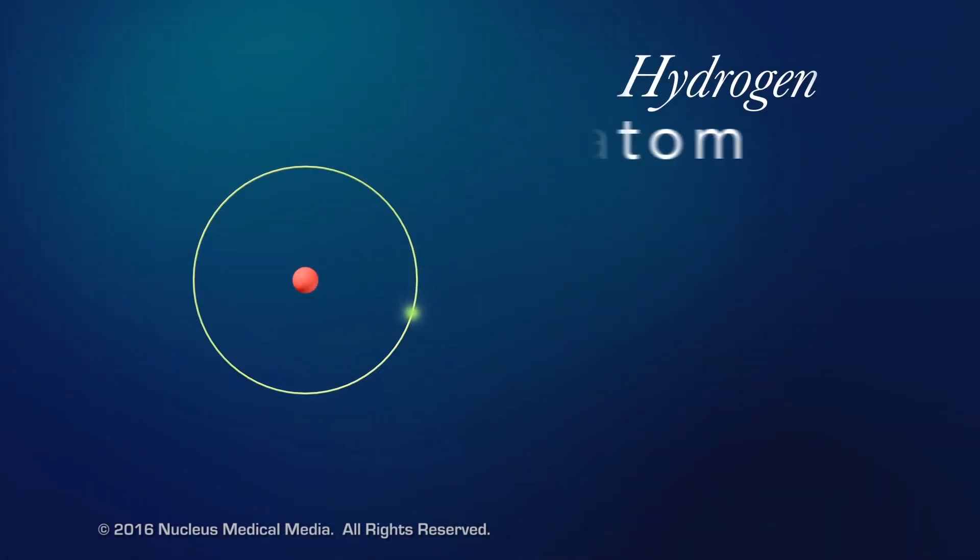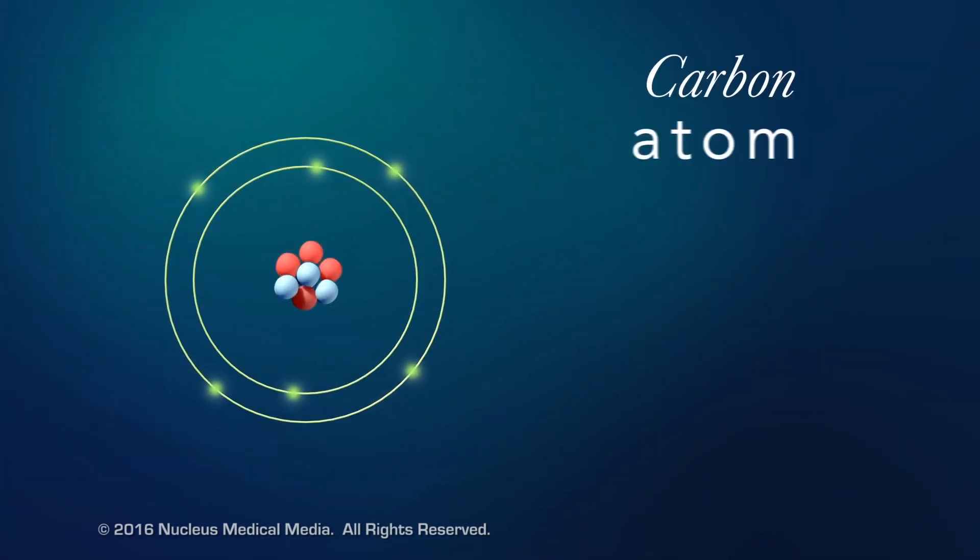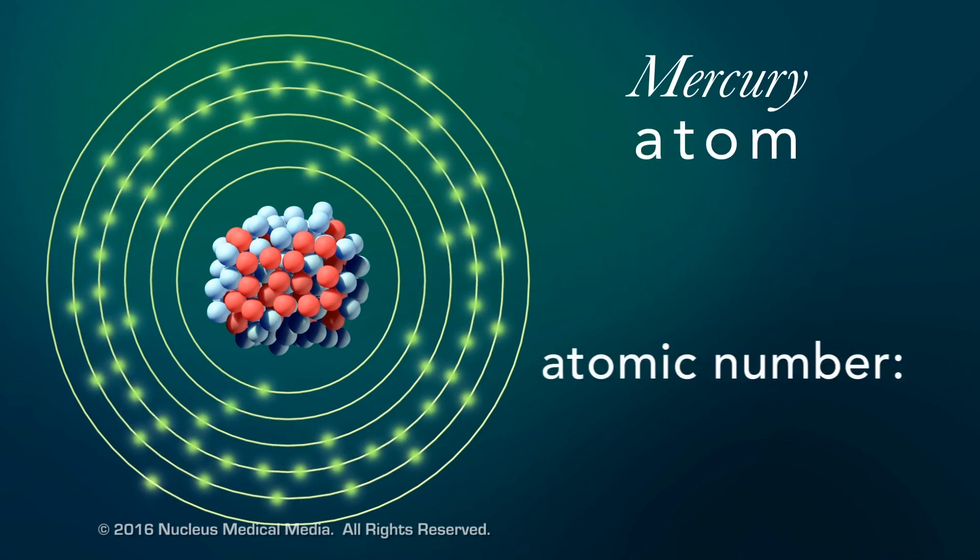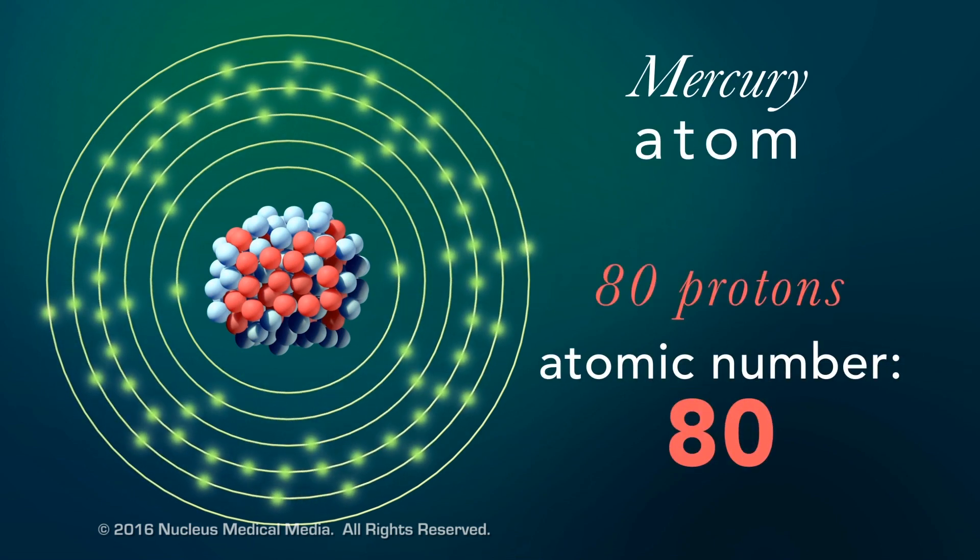For example, hydrogen has one proton in its nucleus, so its atomic number is one. Carbon has six protons, so its atomic number is six. And mercury's atomic number is 80, because it has 80 protons in its nucleus.